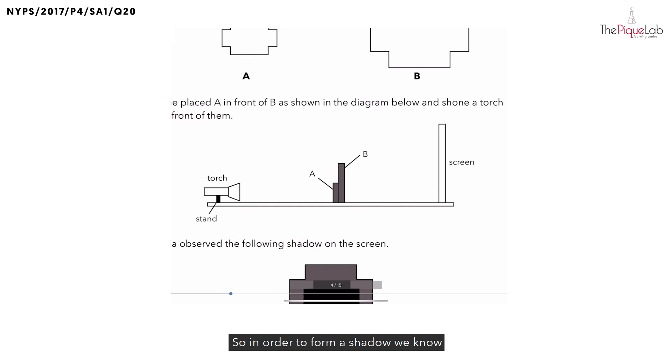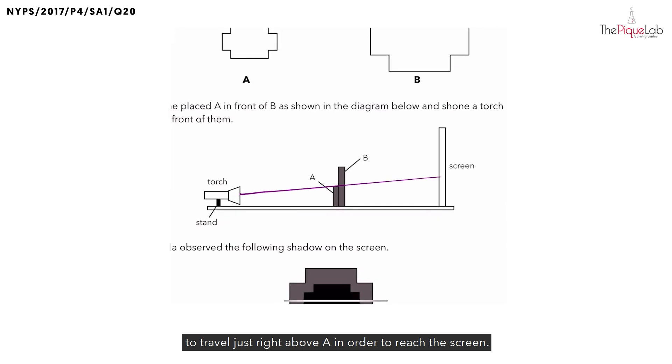In order to form a shadow, we know that light from the light source which travels in a straight line must be blocked by an object that is translucent or opaque. In that case, if I want to form a shadow of A, light from the light source must have been able to travel just right above A in order to reach the screen.